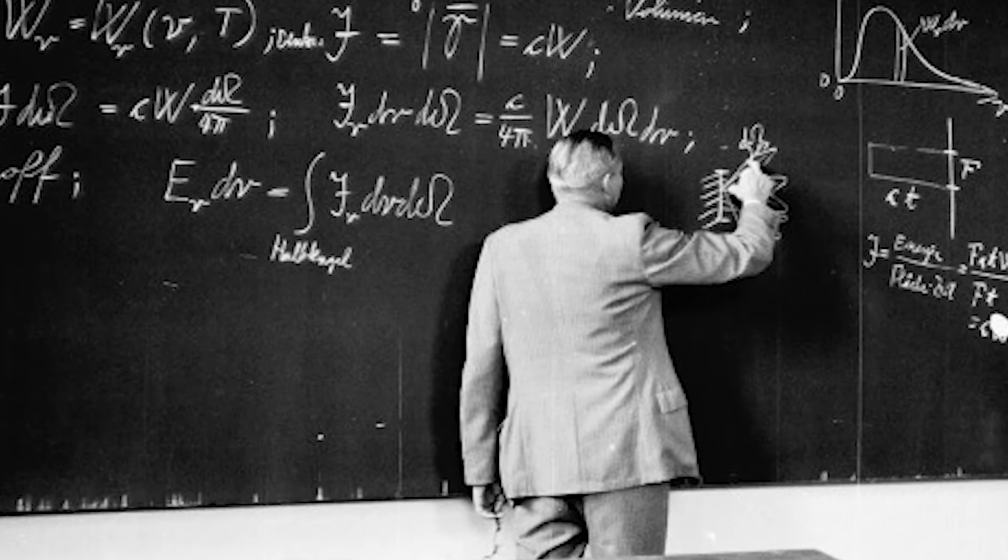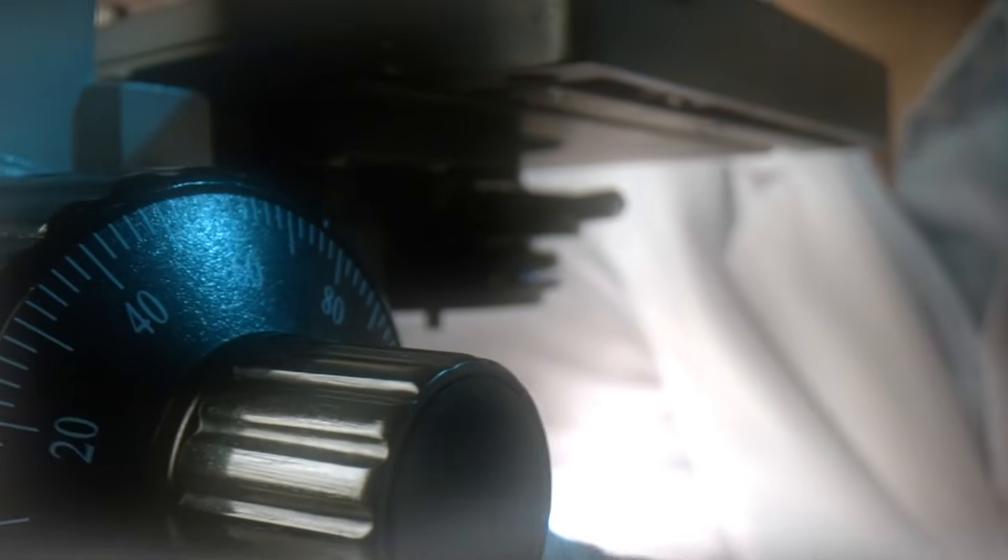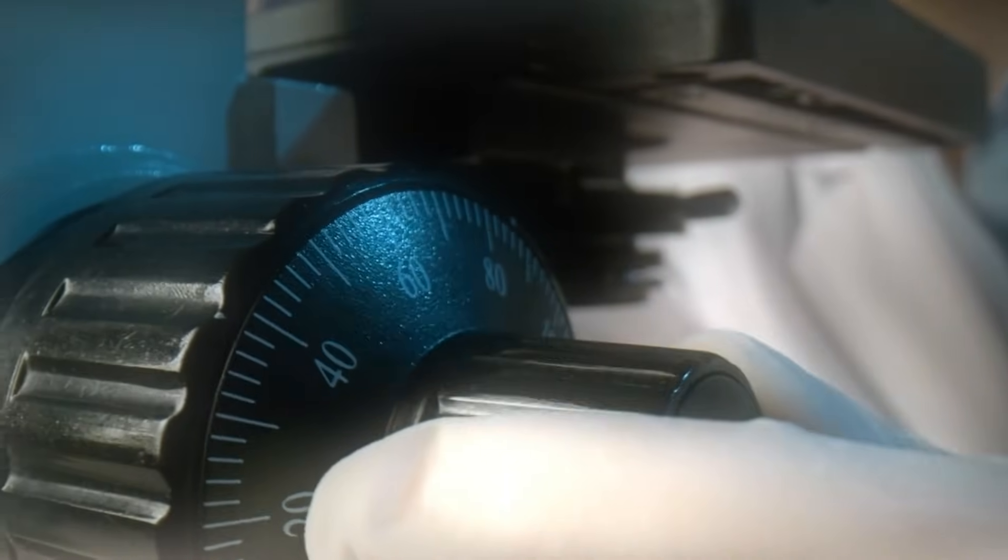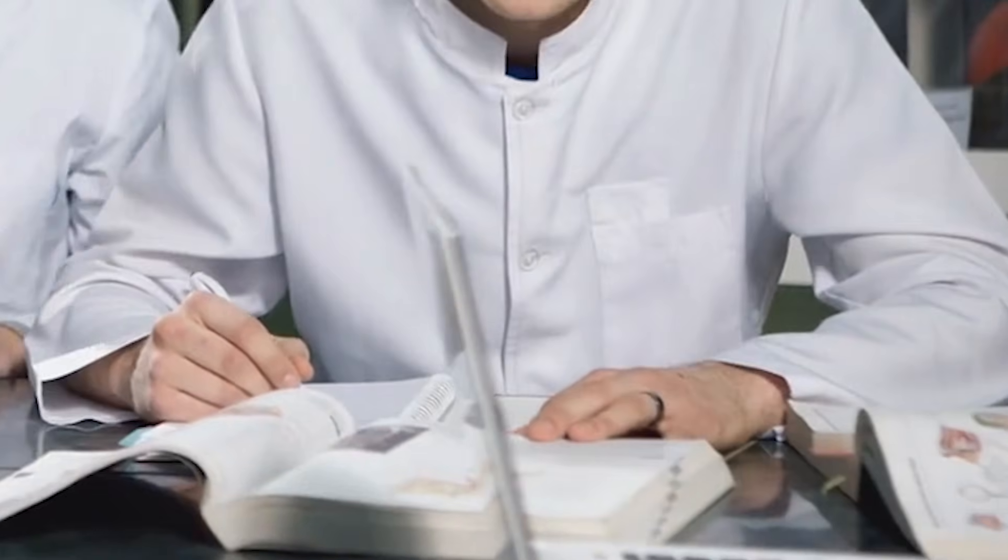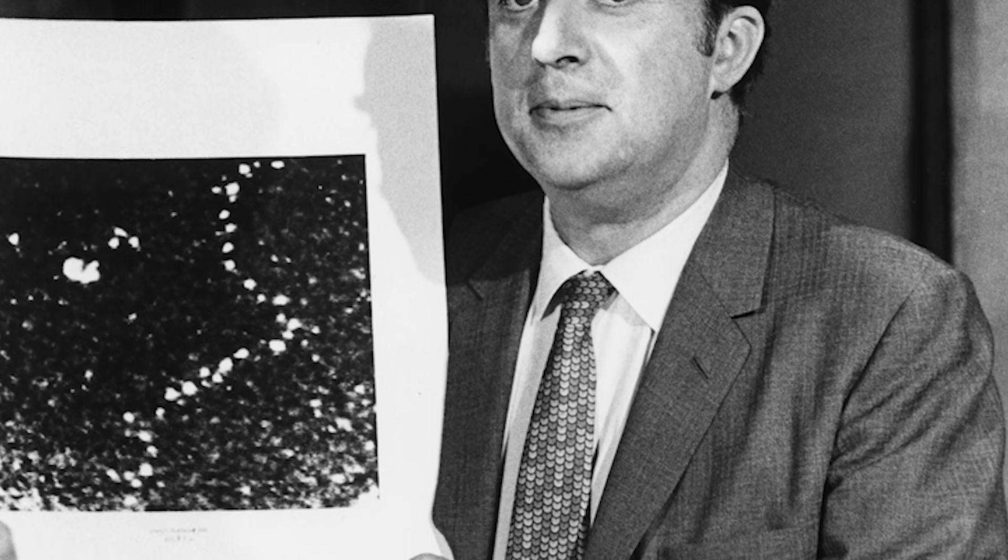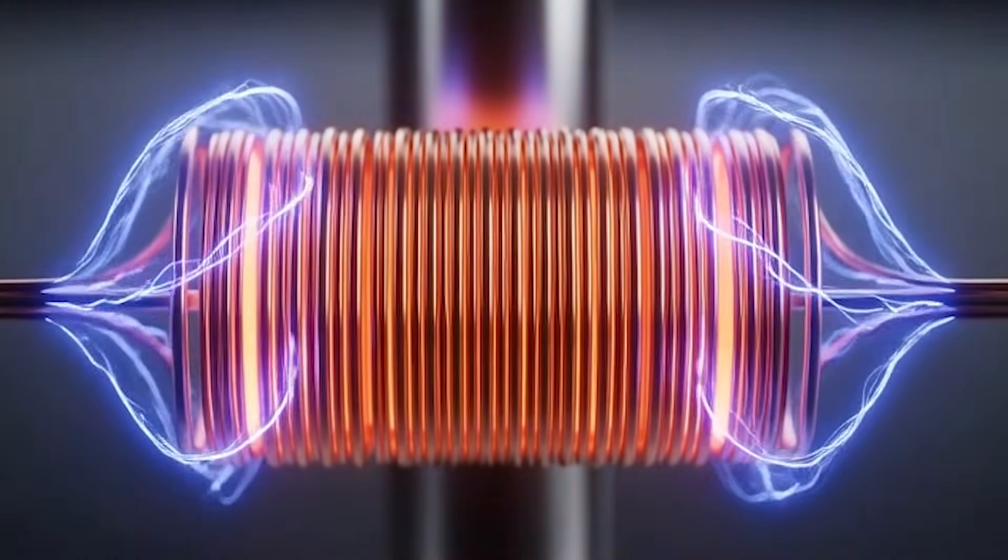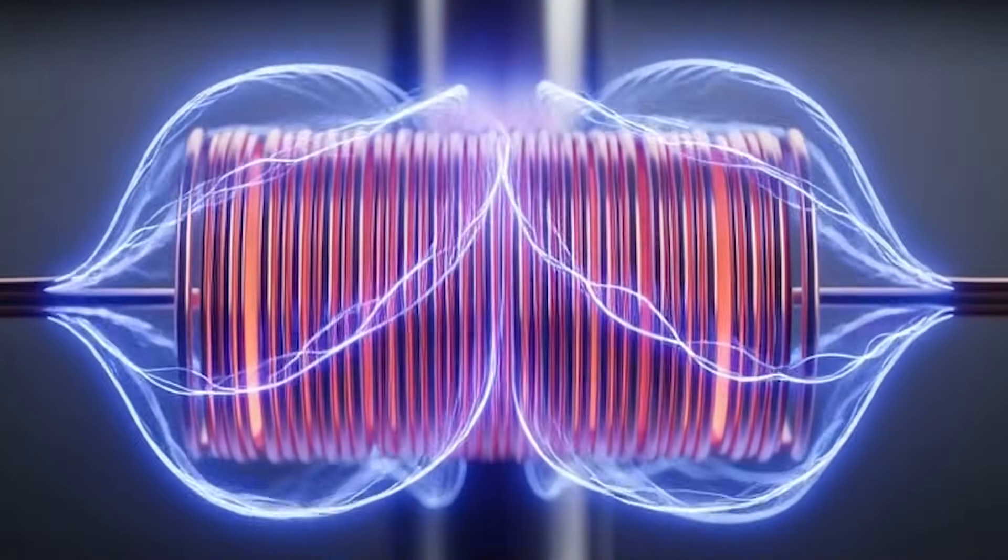Without atomic level images, researchers would be working in the dark. Today, corrected microscopes are essential tools in advanced labs around the world. Students who once only saw atomic diagrams in books can now observe real atoms in minutes. Every crisp image reminds us of the long struggle behind this achievement. It is a story of persistence, creativity, and the refusal to accept limits that seemed absolute.